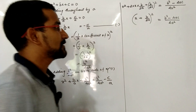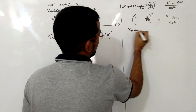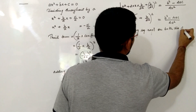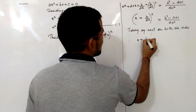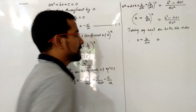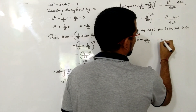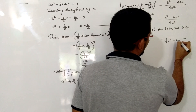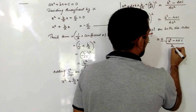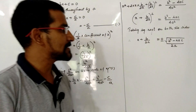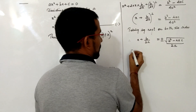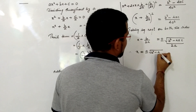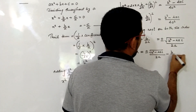Now we have to find the value of x, so we take the square root on both sides. The right hand side is not a perfect square, so it will be ±√(b² − 4ac) / 2a, giving x + b/2a = ±√(b² − 4ac) / 2a.